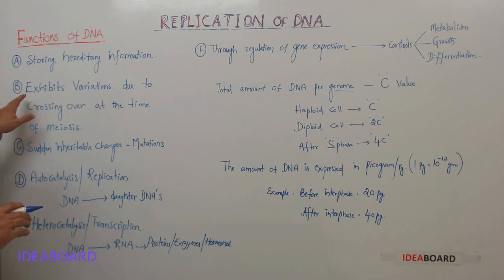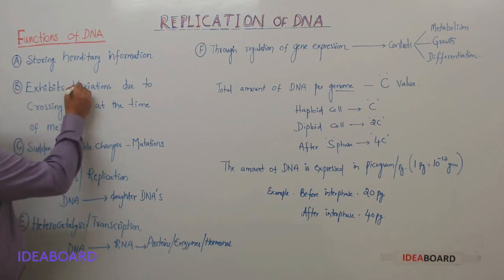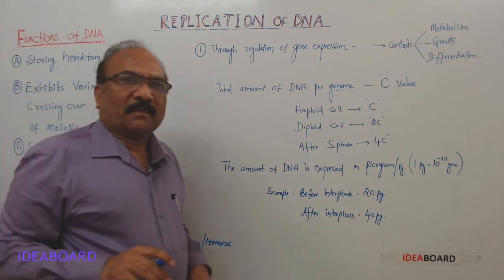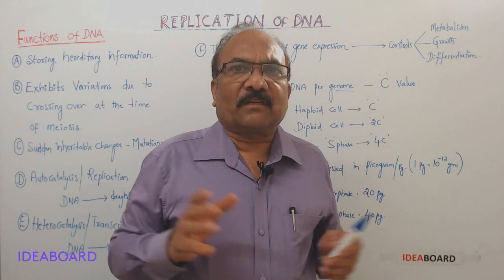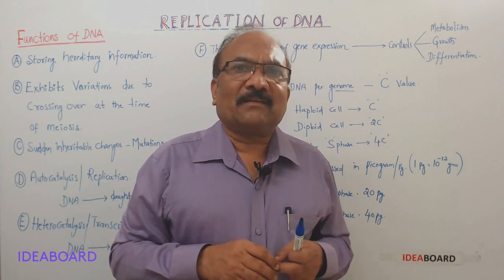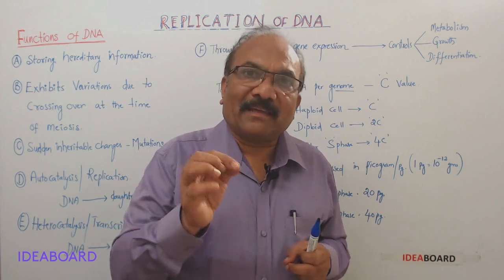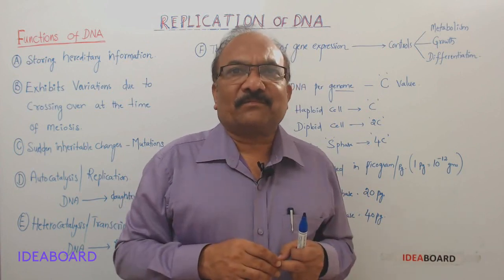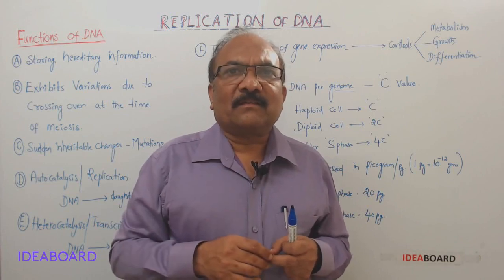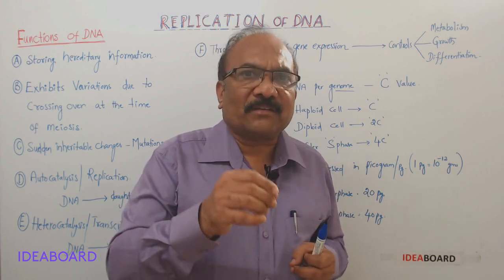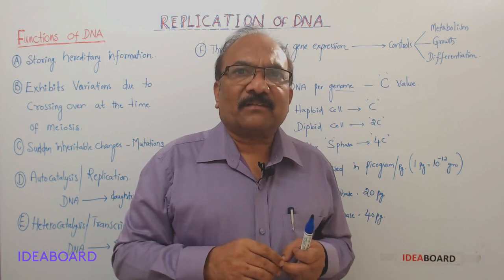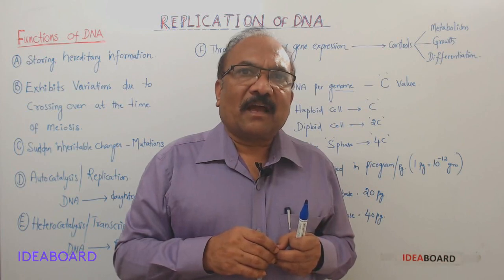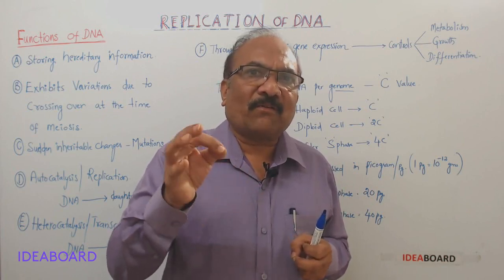The second function: it exhibits variations. We know that children look like parents, but not exactly like parents. This is because of variations. The degree of difference is called variation. And this variation occurs during the formation of gametes.